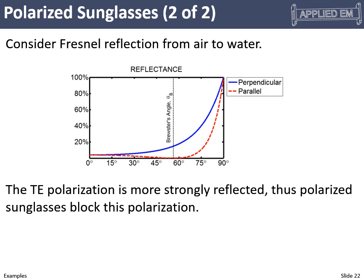To drive this home: a plot of reflection vs. angle for both polarizations shows that the TM polarization reflectance is almost always lower than TE. That's why reflected light is predominantly TE polarized. Blocking TE with a polarized filter reduces glare. Polarized sunglasses are usually beneficial, but they do have some drawbacks — like making your GPS appear black until you tilt your head.